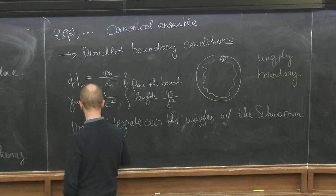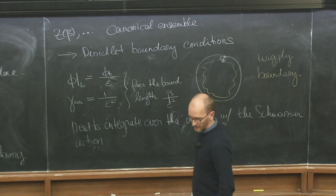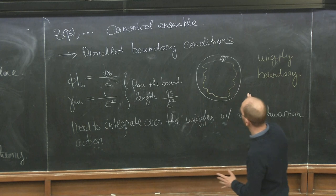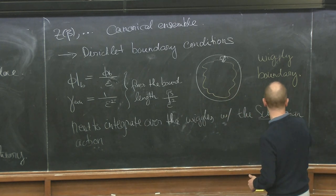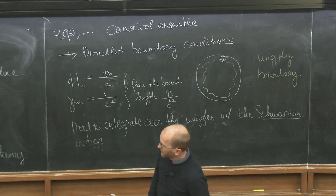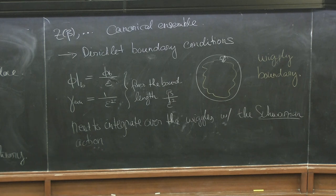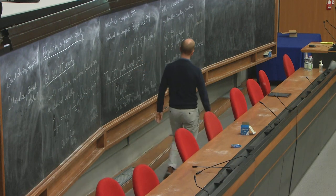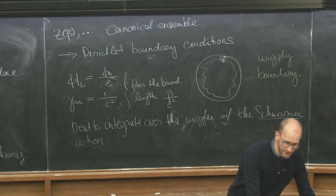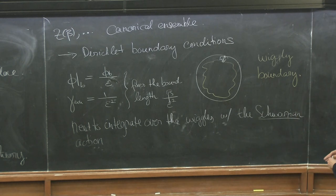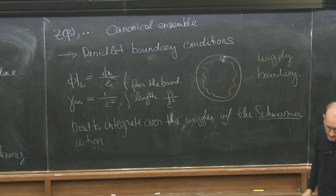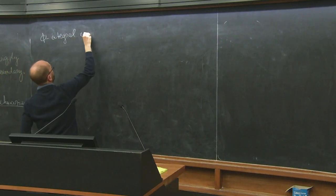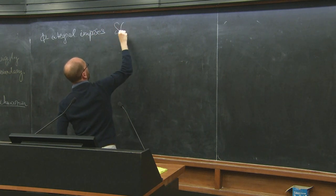It costs you a little bit to wiggle the boundary, but in a nice way. This integral can be done. The d-phi integral just gives you a constraint — it's like a delta function of R plus 2 — so in the end you focus on hyperbolic manifolds. You just need to integrate over the moduli space of the hyperbolic manifold and over the remaining boundary wiggles. The phi integral imposes delta of R plus 2, and it remains to integrate over hyperbolic metrics.